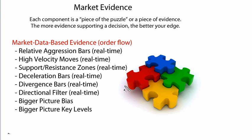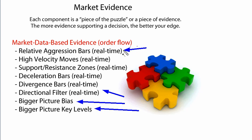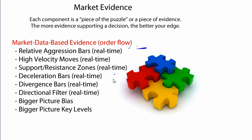In our software, we have some real-time information. We also like to look at the bigger picture bias, bigger picture levels, and put that within the context of what's happening in real-time. Within the real-time auction, we look at relative aggression bars, high-velocity moves, support resistance zones, deceleration, and so forth.